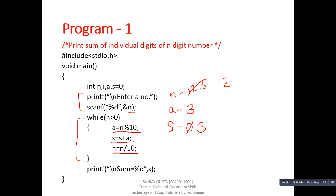Now we check the condition: n is 12, which is greater than 0, so the loop continues. We calculate 12 modulus 10, and the remainder is 2, so a becomes 2. Then s plus a: the last value of s was 3 and current a is 2, so s becomes 5. Then n equals n divided by 10: 12 divided by 10 equals 1. The condition is true again, so we calculate 1 modulus 10 — since we are dividing a smaller number by a greater number, the remainder is 1. So a becomes 1, and s plus a: s was 5, a is 1, so s becomes 6.